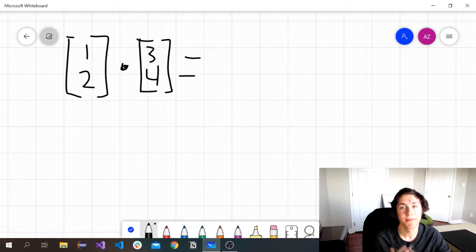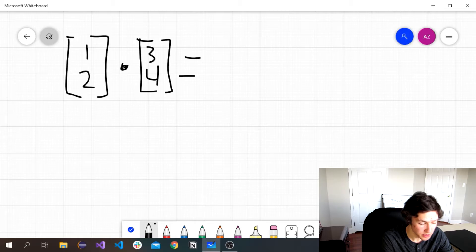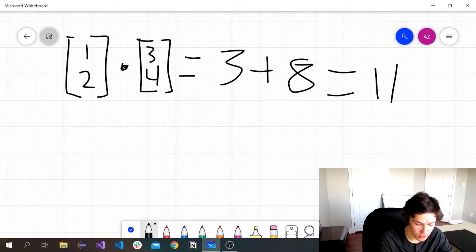Computationally, what you're doing is you're multiplying matching pairs of coordinates together and adding them all up. So the three multiplies by the one to get three and the four multiplies by the two to get eight, which gives you 11.